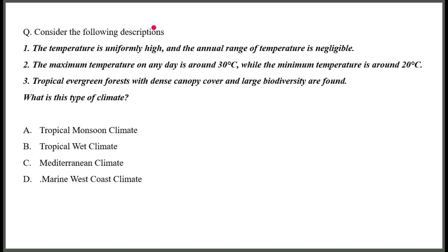Consider the following description: the temperature is uniformly high and the annual range of temperature is negligible. The maximum temperature during the day is around 30 degrees Celsius, while the minimum is around 20 degrees Celsius. Tropical evergreen forests with dense canopy cover and large biodiversity are found here. This is the Tropical Wet climate.